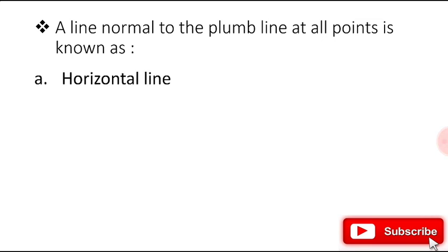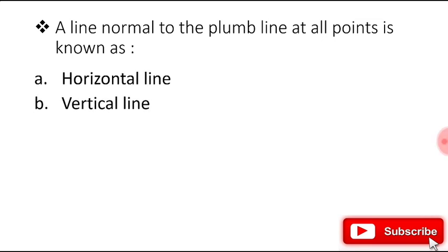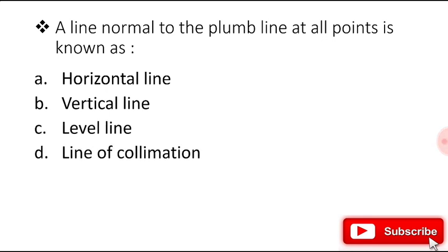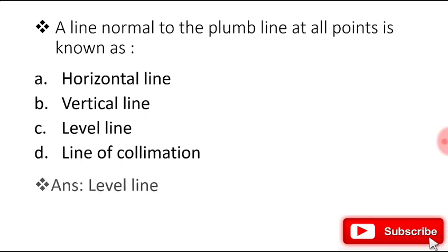A line normal to the plumb line at all points is known as: a horizontal line, vertical line, level line, or line of collimation? The right answer is level line.